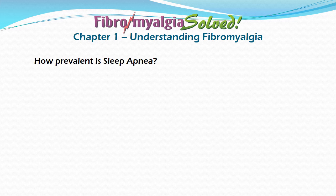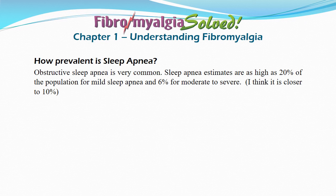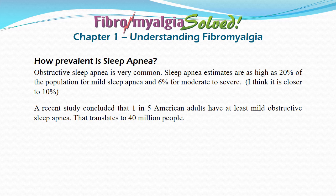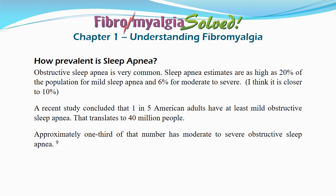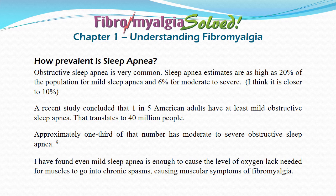Earlier we discussed how prevalent fibromyalgia is — now let's discuss how prevalent sleep apnea is. Obstructive sleep apnea is very common. Estimates are as high as 20% of the population for mild sleep apnea and 6% for moderate to severe, though I think it is more like 10% as I believe doctors undertreat it and set the bar too high for what they consider moderate to severe. A recent study concluded that one in five American adults — translating to 40 million people — have at least mild obstructive sleep apnea. I found even mild sleep apnea is enough to cause the level of oxygen lack needed for muscles to go into chronic spasm.